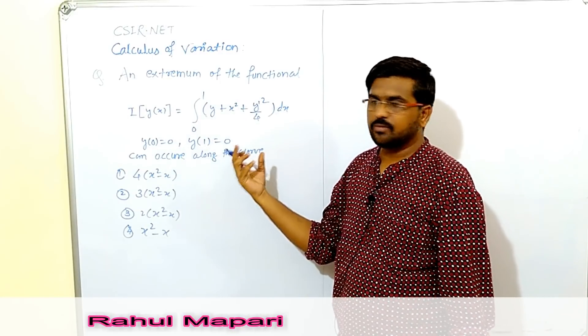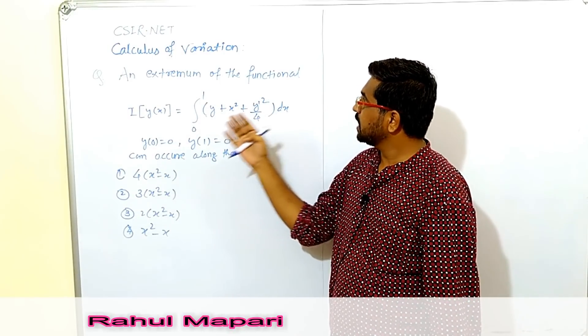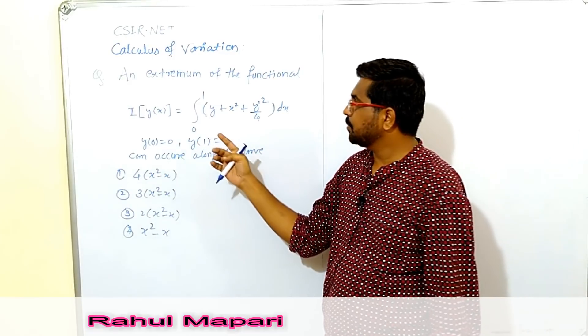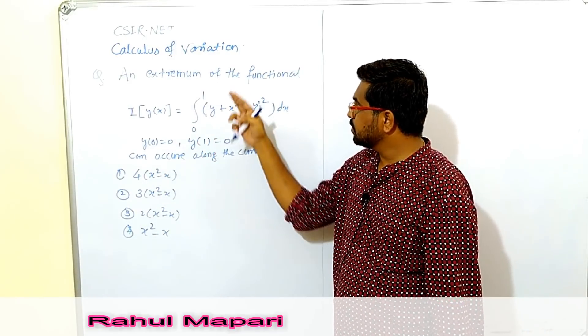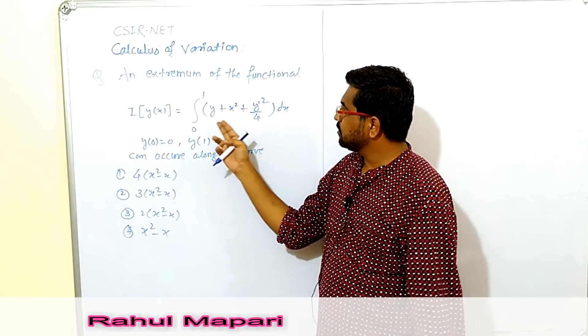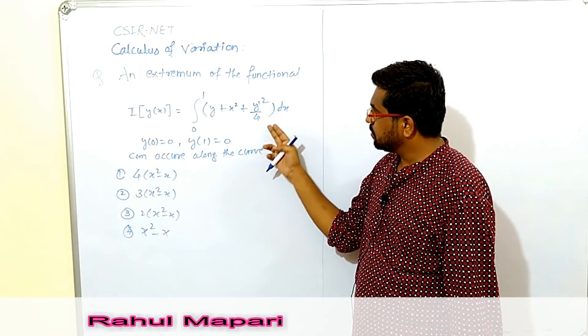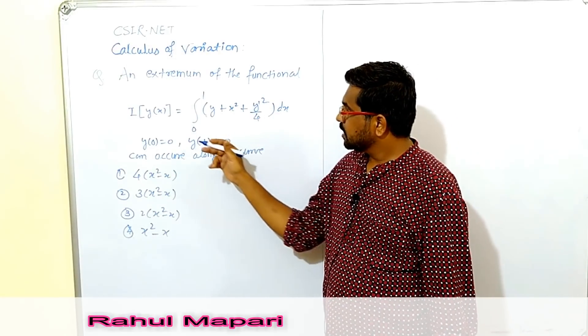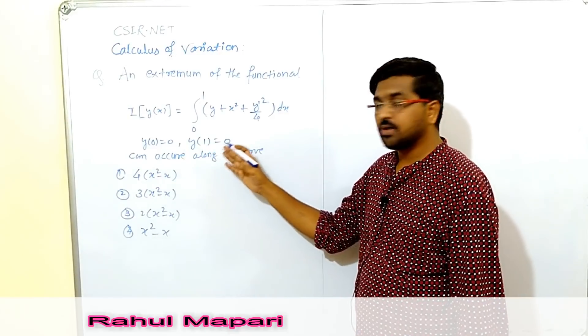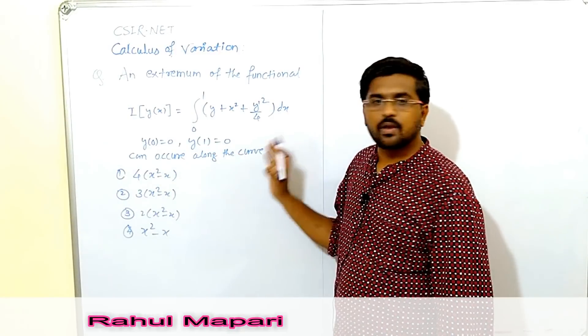From calculus of variation, question is an extremum of the functional I(y(x)) equals to integral 0 to 1 of y plus x square plus y dash square by 4 dx. Conditions are y of 0 equals to 0 and y of 1 equals to 0 can occur along the curve.